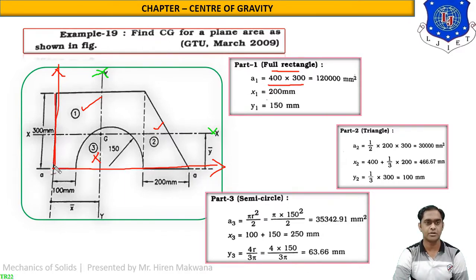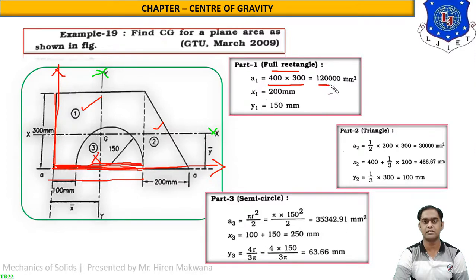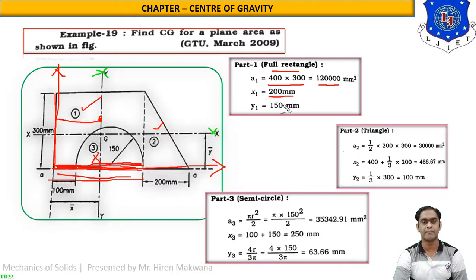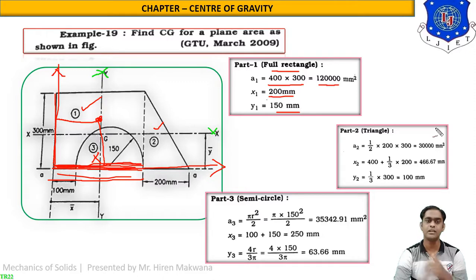For part one, the full rectangle: width = 400 mm (100 mm gap + diameter 300 mm) and height = 300 mm, so area = 400 × 300 = 120,000 mm². CG is at the midpoint: x1 = 400/2 = 200 mm and y1 = 300/2 = 150 mm.